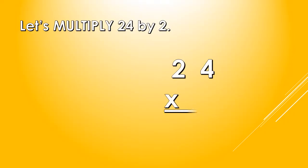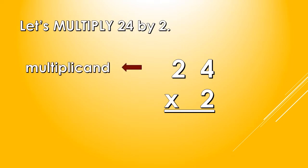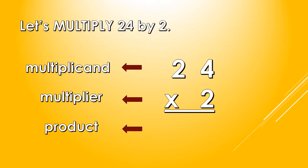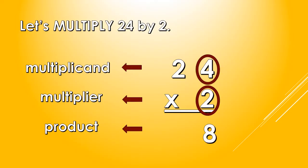We have 24 times 2. This 24 is what we call the Multiplicand, and this 2 is what we call the Multiplier. And the answer that we are looking for is called the Product. Now, how do we multiply? We multiply the Multiplier to the Multiplicand starting from the digit on the right. So, we multiply 2 and 4. 2 times 4, we get 8.